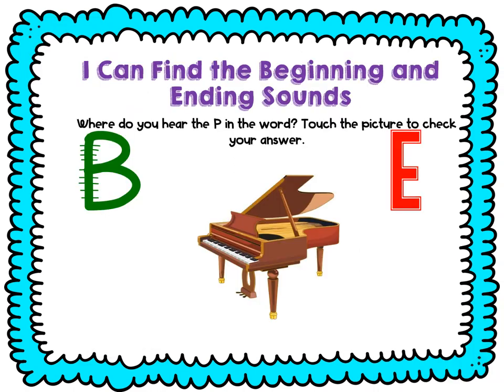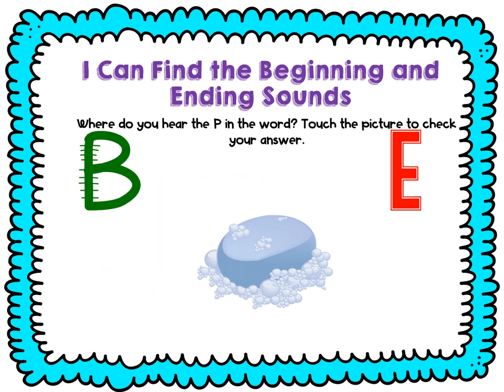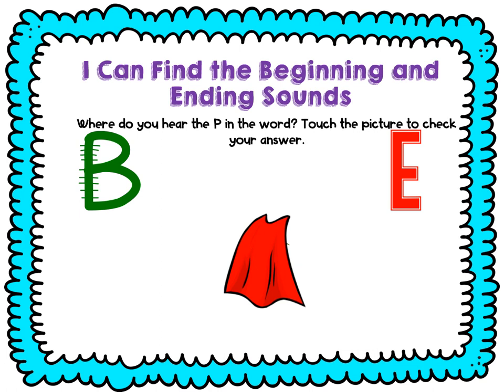We're still working with our P sound, our letter P. But each picture has the P sound either in the beginning or ending — I need you to tell me where do you hear the P sound. Try to say it before I tell you. Say piano — piano. Where did you hear the P in piano? The beginning. What about soap? Say soap — soap. Ending. Say cape — cape. Where do you hear it? Ending. That is a palm tree — say palm tree — palm tree. Where do you hear it? Beginning.